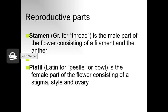The reproductive parts of the flower are the stamen and the pistil. Stamen, Greek for thread, is the male part consisting of a filament and an anther. Pistil, which is Latin for bowl, is the female part of the flower. It consists of three parts, which you'll need to know.